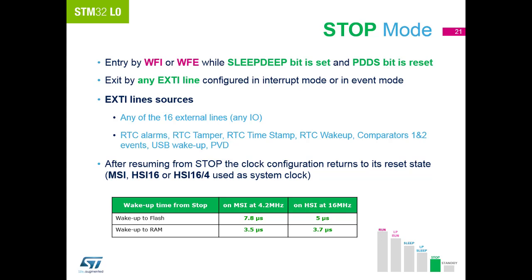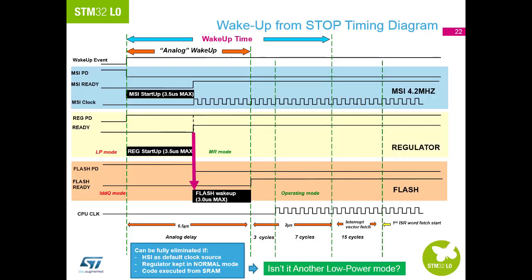Entry into stop mode is controlled by the same two instructions as sleep mode, but this time with the deep sleep option enabled in the Cortex core. Exit from stop mode is via any external event connected to the GPIO pins, the comparators, the USB, or the RTC if enabled. The wake-up time from stop mode is a predefined sequence of 8.5 microseconds plus 22 CPU cycles. Most parts require other parts of the system to have started first, but this can be shortened as shown and is called sleep mode.